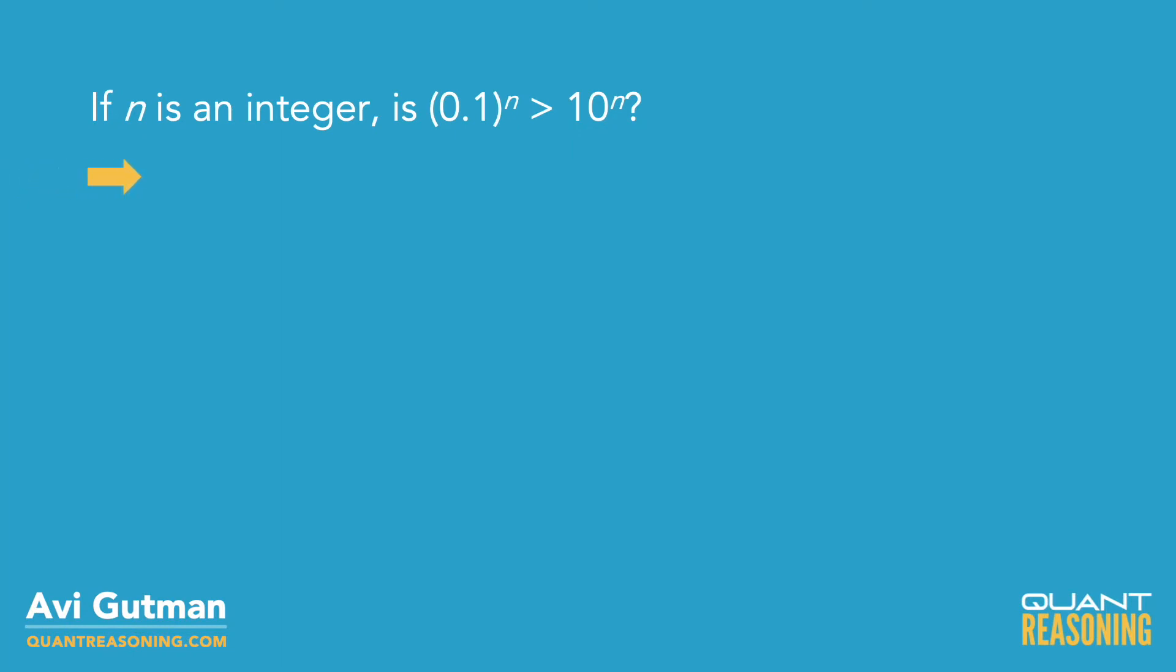I'm thinking though that if n is 0, then they'd be equal. 1 tenth to the power of 0 is the same thing as 10 to the power of 0. In both cases, it's just 1.